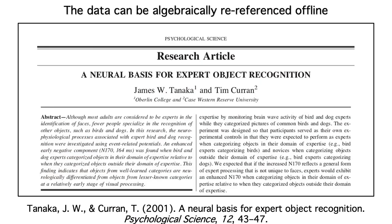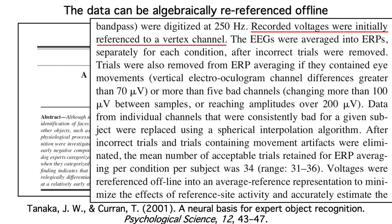Second, you can algebraically re-reference the data offline. That's what this N170 study did. They used an EEG recording system that always uses CZ as the reference during the recording. CZ is also called the vertex electrode because it's on the top of the head. They later re-referenced the data to the average of all the sites, which is a common practice when looking at the N170.